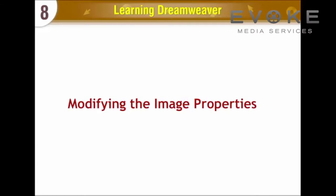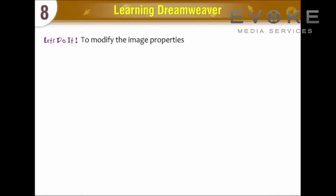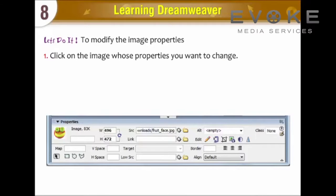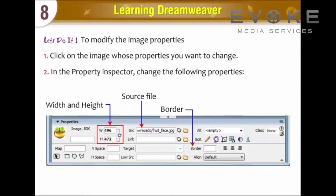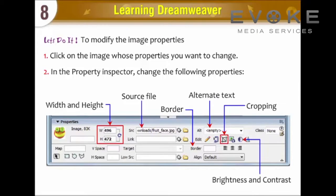Modifying the Image Properties. To modify the image properties, click on the image whose properties you want to change. In the Property Inspector, change the following properties: Width and Height, Source File, Border, Alternate Text, Cropping, Brightness and Contrast, Creating Hotspots, and Image Alignments.